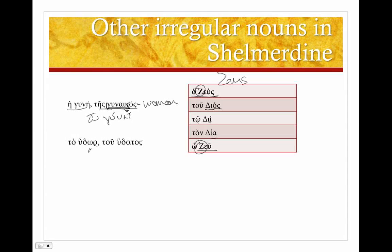The other irregular one that's included is to hudor, tou hudatos — 'water.' This is actually only irregular because of this -or ending, your stem. So it's irregular in the nominative and accusative singular, both to hudor — it's neuter. But otherwise your stem is hudat: hudatos, hudati, hudor. Plural: hudata, hudaton, hudasin, hudata. Nothing irregular about that — it's a stem that ends in tau.